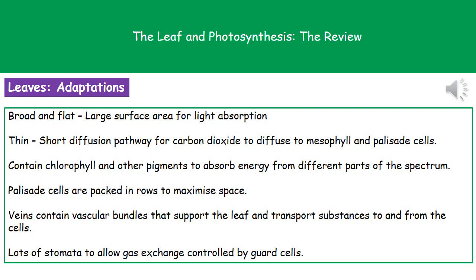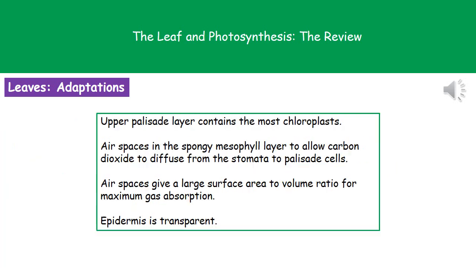There are lots of stomata on the underside of the leaf to allow gas exchange, and those stomata are controlled by the guard cells found on either side. Inside the upper palisade layer we've got the greatest amount of chloroplasts, because it's closest to the surface that faces the light — so having more chloroplasts there means we can capture more of that sunlight energy.